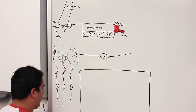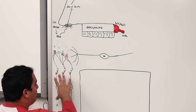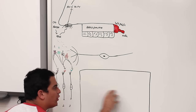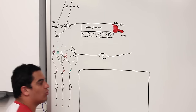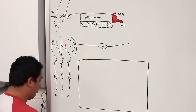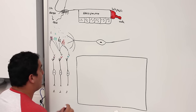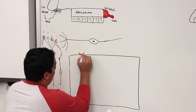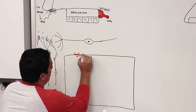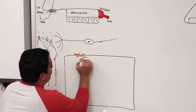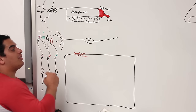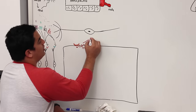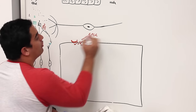Now let's talk about how this odorant is triggering chemical and then electrical activity. On the membrane of the ciliary extension, there is a specific receptor protein. It's actually interesting because this protein is a part of the G protein coupled receptors — it's a G protein coupled receptor.